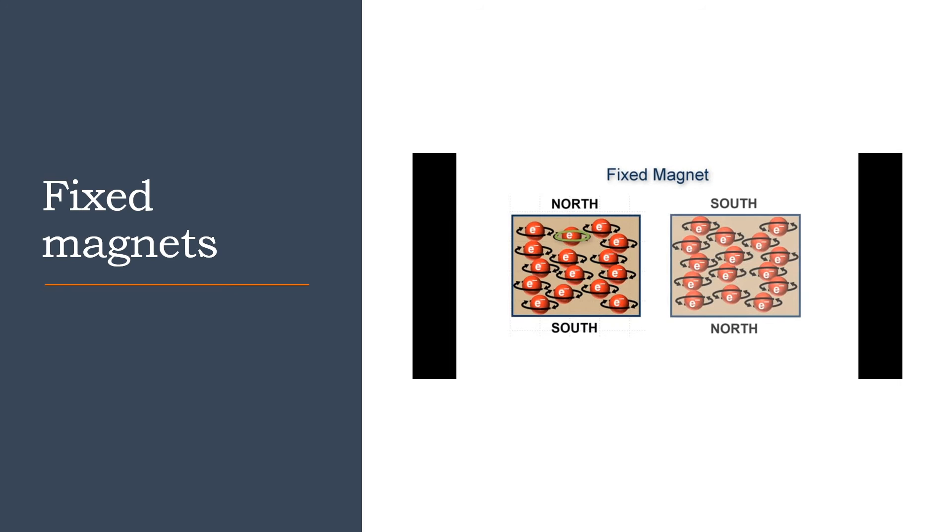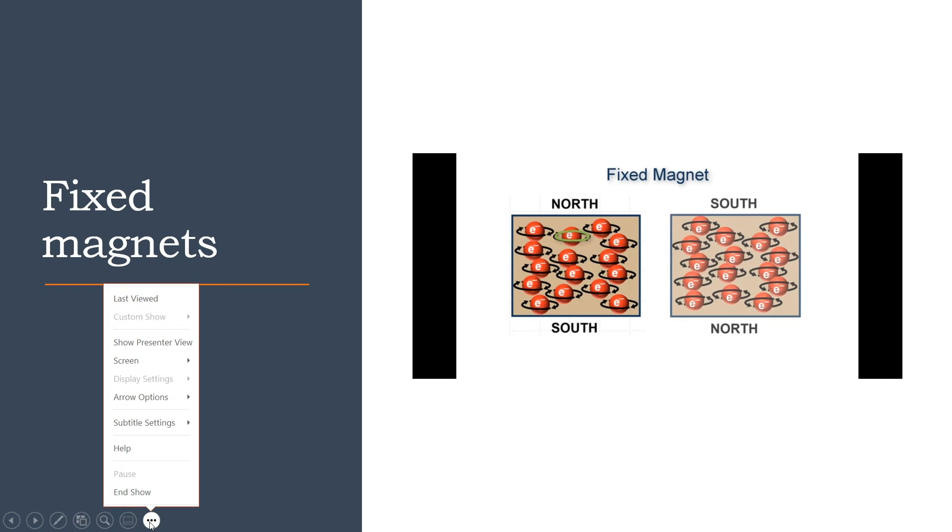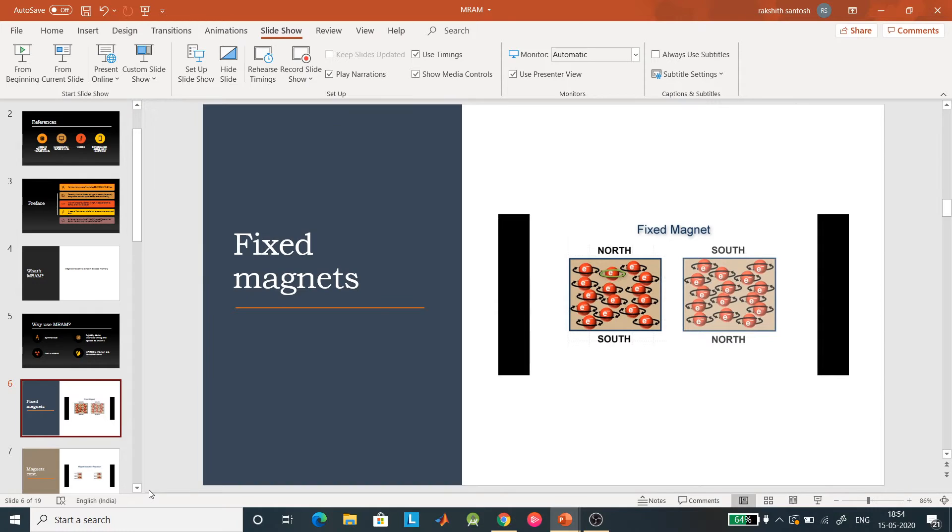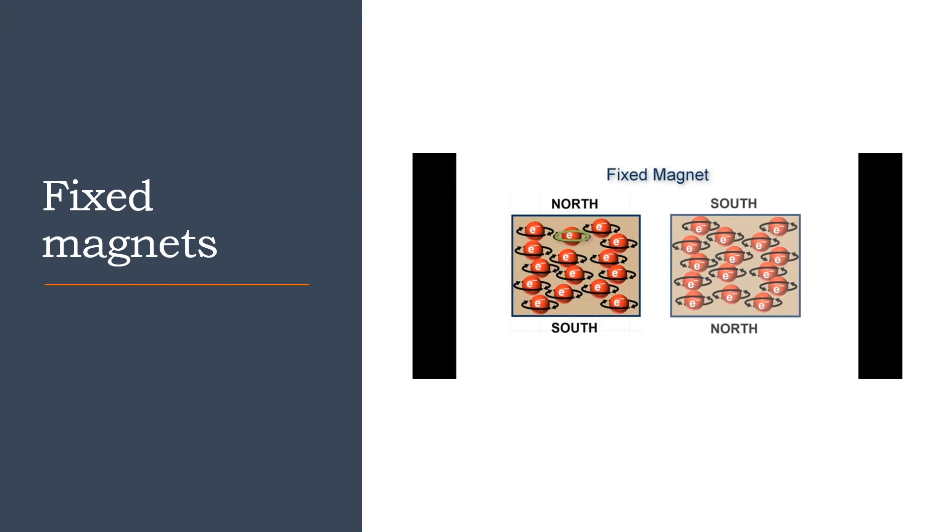We have North and South. What gives the magnetic property to a certain substance? It's the electron spin.